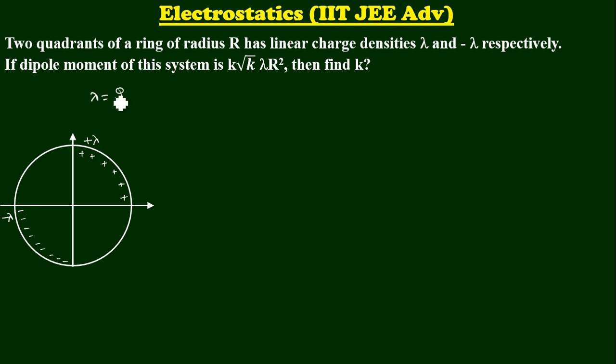If you consider Q is a charge and length is nothing but say L, charge per unit length is nothing but linear charge density. Now, if the dipole moment of the system is k root k lambda R square, then what is the value of k? There is a question. Now, first of all, let me define what is dipole moment and what is dipole.